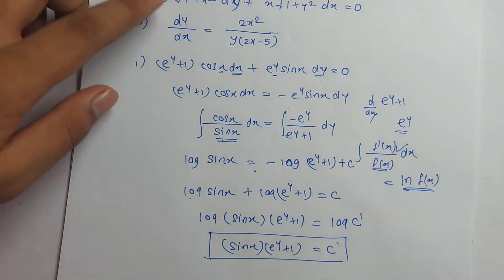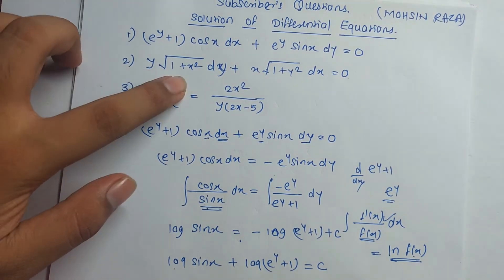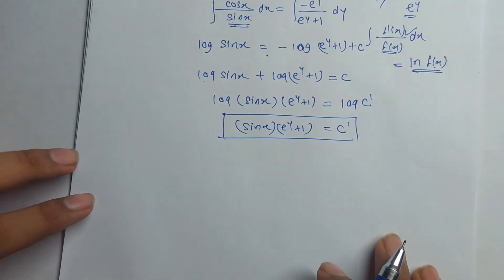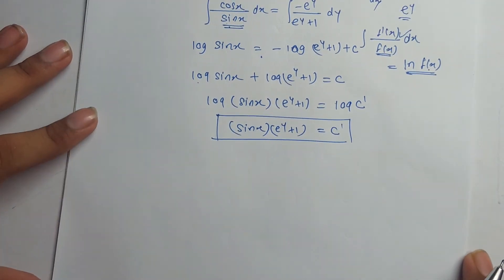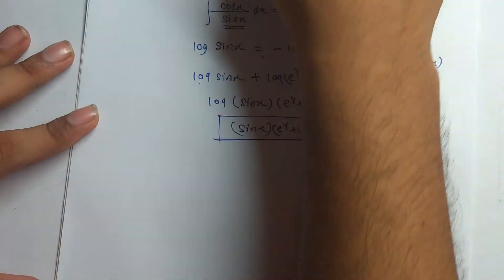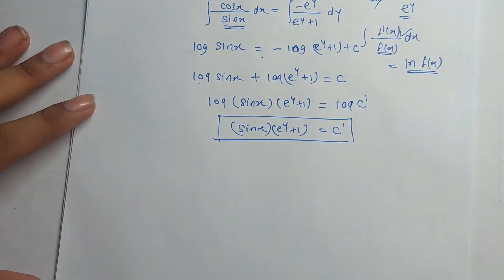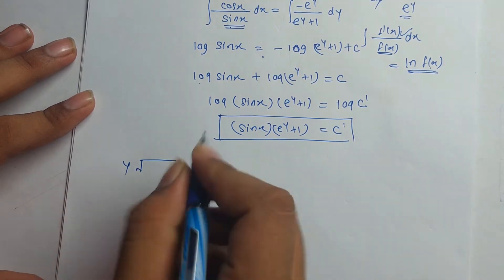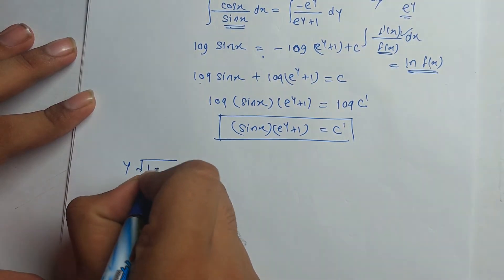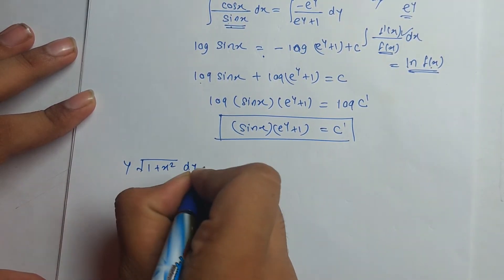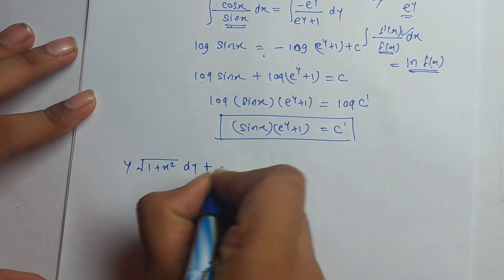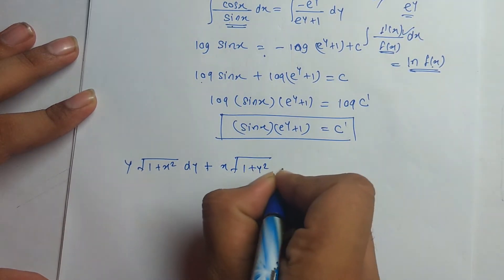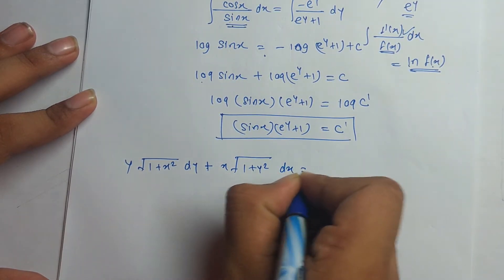Now we solve the second question: y√(1 + x²)dy + x√(1 + y²)dx = 0.